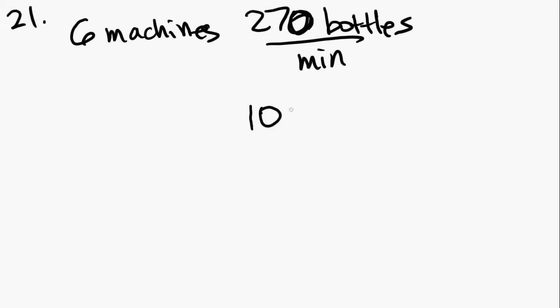how many bottles could 10 such machines produce in four minutes? So they're saying 10 machines, four minutes. We're going to have to convert this one minute to four minutes and also try to figure out how many bottles one machine can produce in one minute. We know six machines can produce 270.